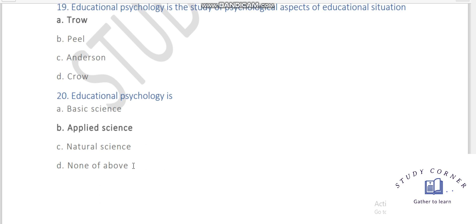Educational psychology is basic science, applied science, or natural science. This is the basic science. It is not applied science. The right answer is applied science. You know, physics, chemistry, and natural science. It is applied science. Thank you so much.